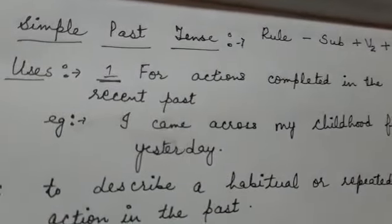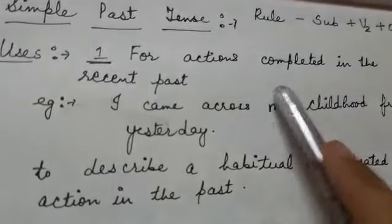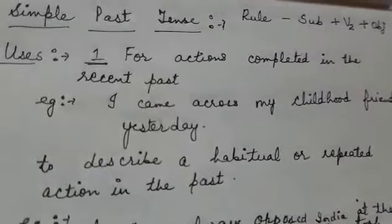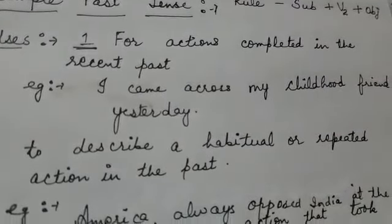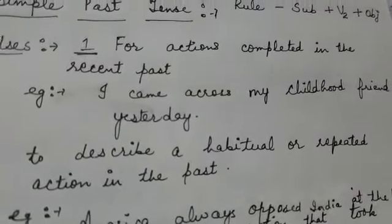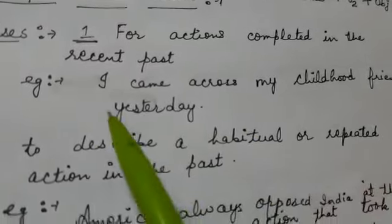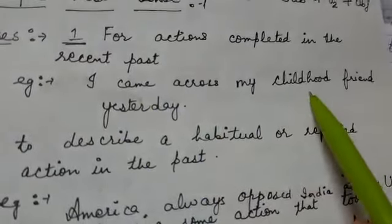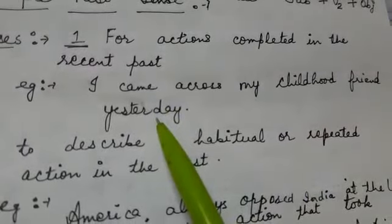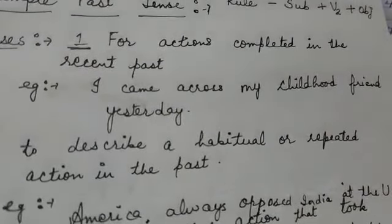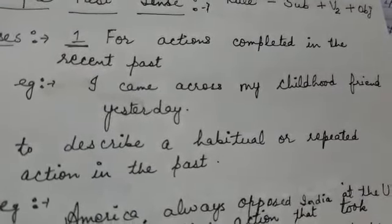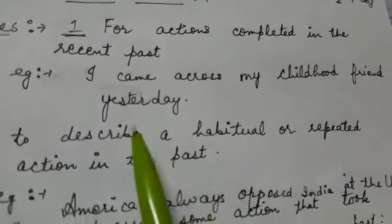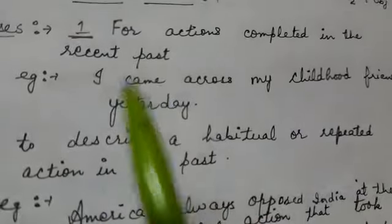Where is it used? For actions completed in the recent past — un actions ke liye jo recent past mein complete hoi hon. For example, 'I came across my childhood friend yesterday.' Kal hi mein apne bachpan ke doost se mila. So yesterday is the recent past.